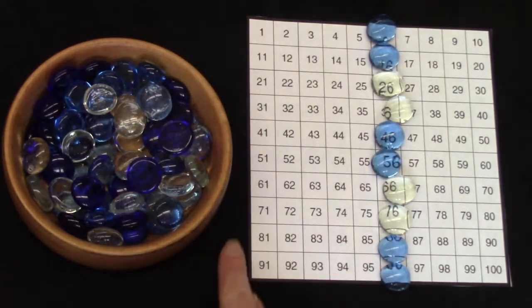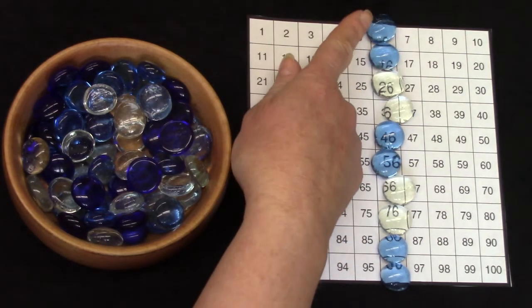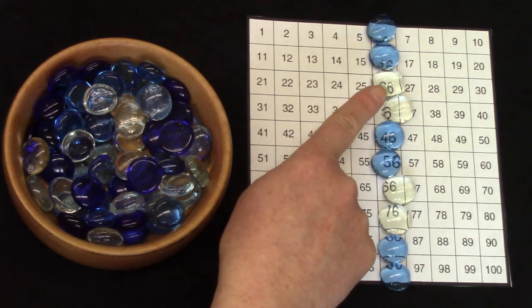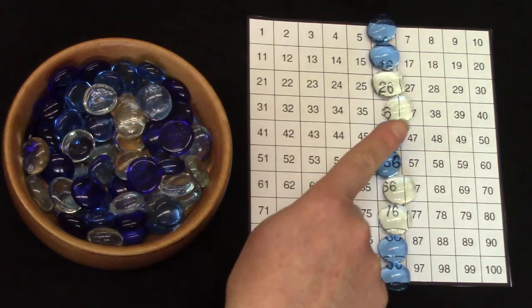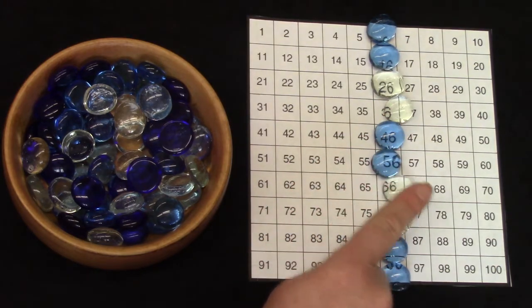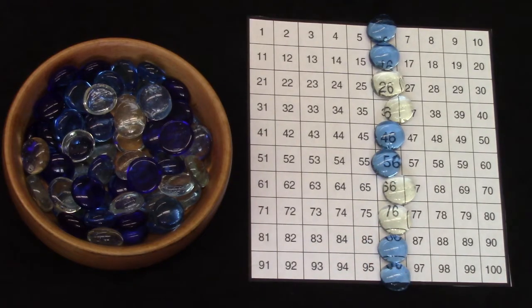86 plus 10 is going to be 96. Our hundreds chart is set up to help us add 10 to a number. 6 plus 10 is 16. 16 plus 10 is 26. Plus 10 is 36. Plus 10 is 46. Then 56, 66, 76, 86, and 96.